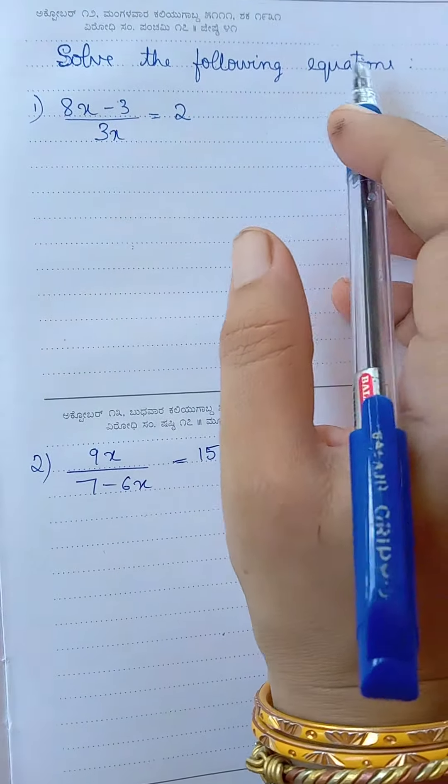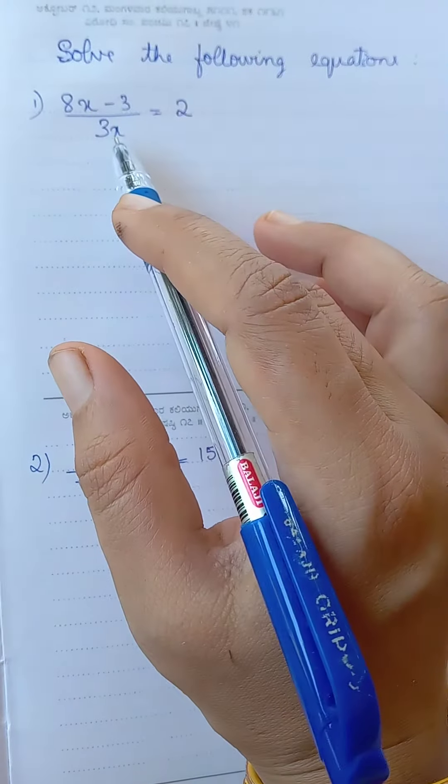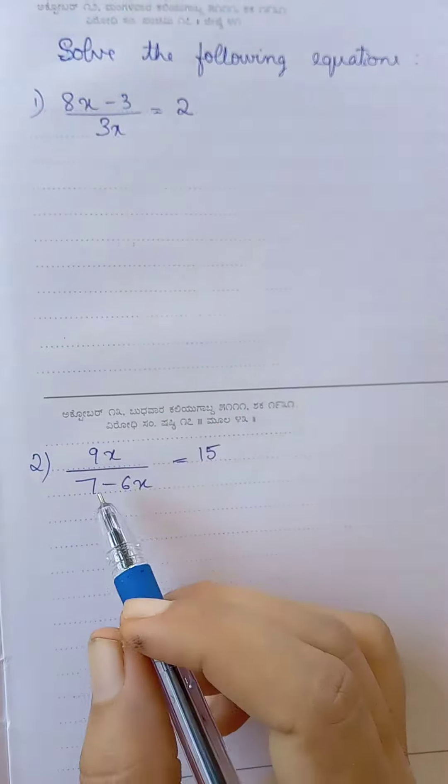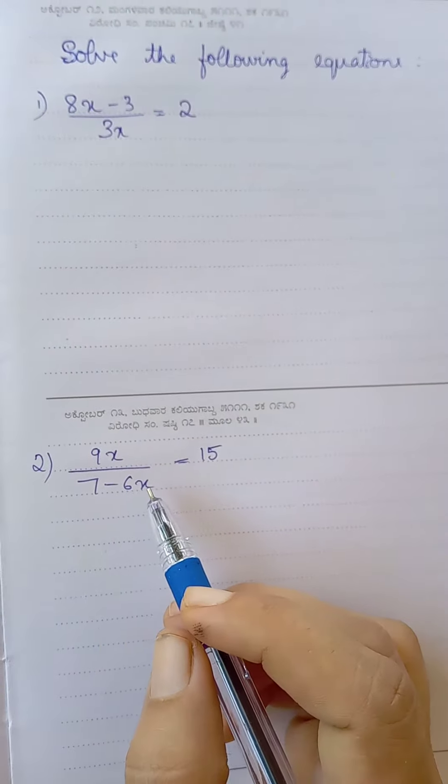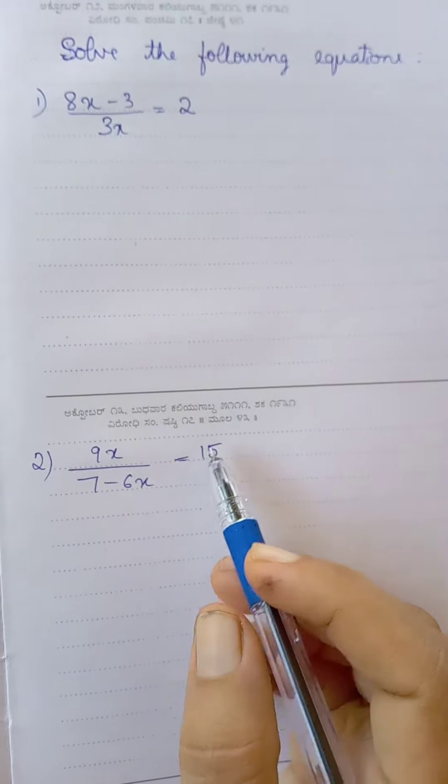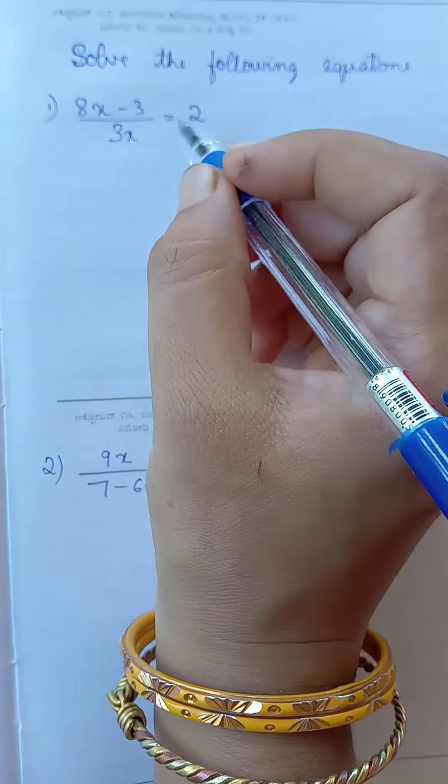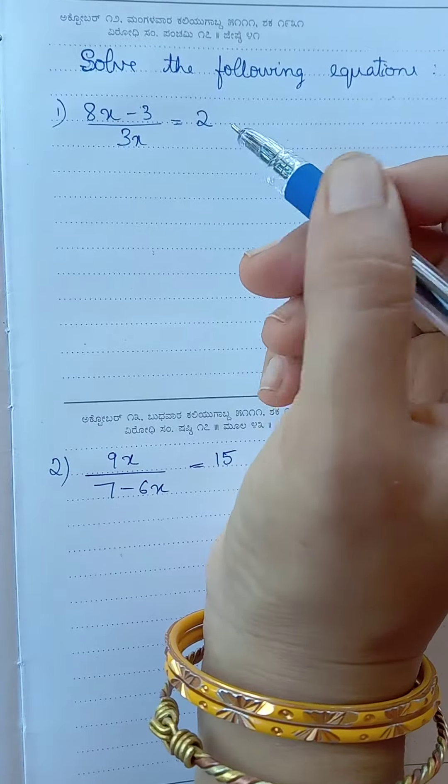Solve the following equations: 8x minus 3 by 3x equal to 2, and 9x by 7 minus 6x equal to 15. You need to solve these equations and find the value of x.